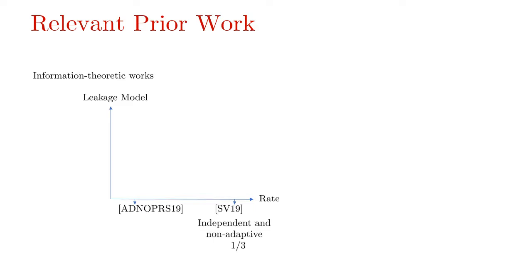We will compare prior works based on the leakage models they support and their rate. From the perspective of rate, the result due to Srinivasan and Vasudevan has an impressive rate of one-third supporting the basic leakage model namely the independent and non-adaptive leakage model. From the perspective of leakage models, Chattopadhyay et al. and Kumar et al. support the strong leakage model namely the joint and adaptive leakage model. They also let the joint queries to be overlapping letting the adversary to ask leakage on a share multiple times. But observe that even for any restricted setting of N and T, there is not even a constant rate LRSS for any model other than the independent and adaptive leakage model.